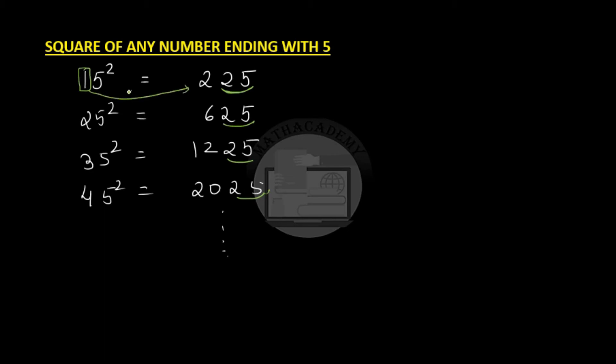And you multiply that digit by one more. So, one more than one is 2. 1 times 2 gives us 2.